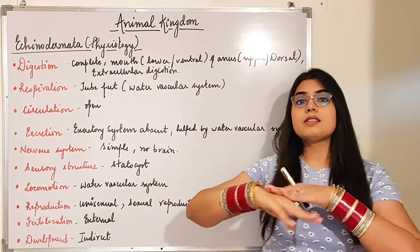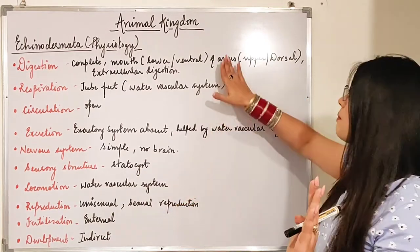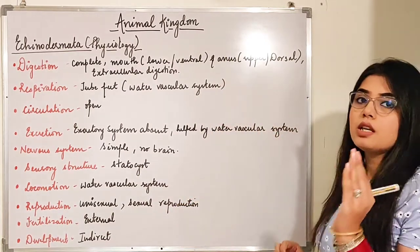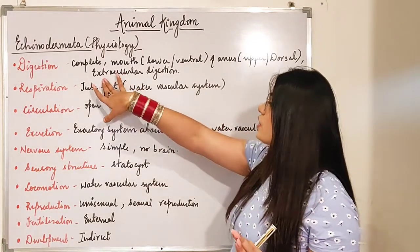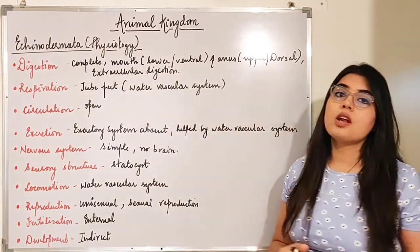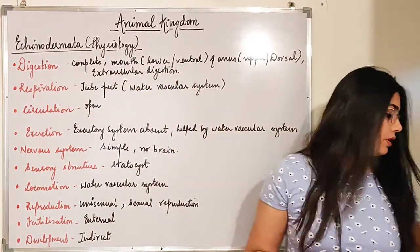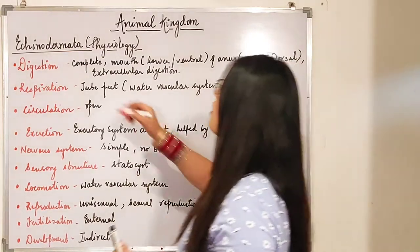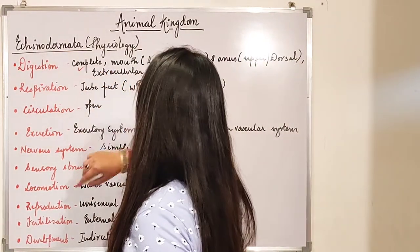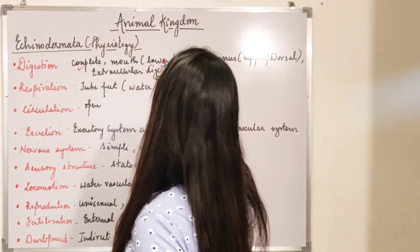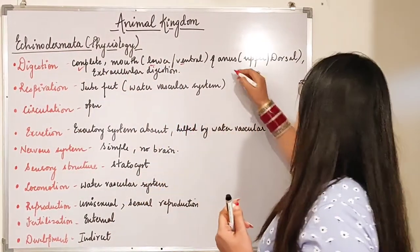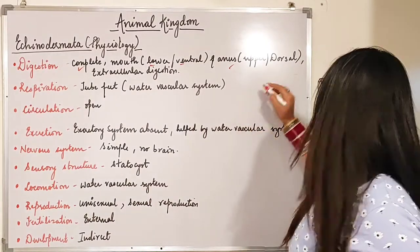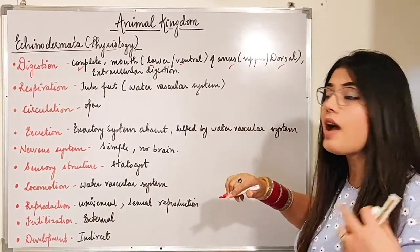The anus is on the upper side, that is the dorsal side. All the things are mentioned on the board, make sure you are taking notes. Digestion is extracellular. So: complete digestive system, mouth on the lower/ventral side, anus on the upper/dorsal side, and extracellular digestion.